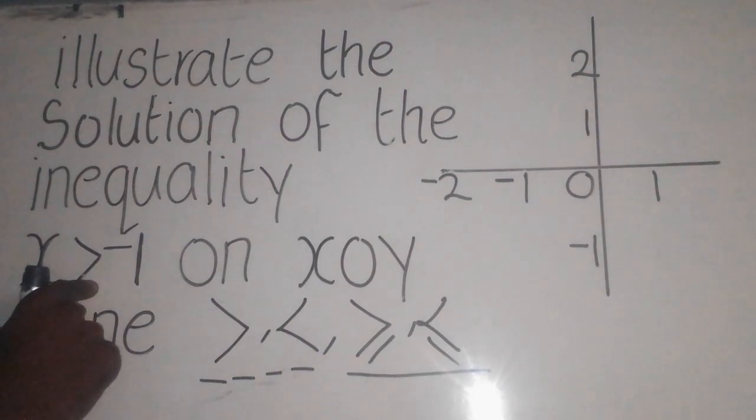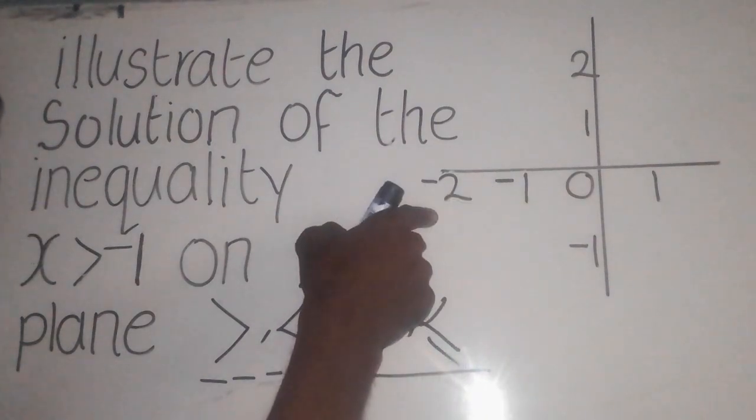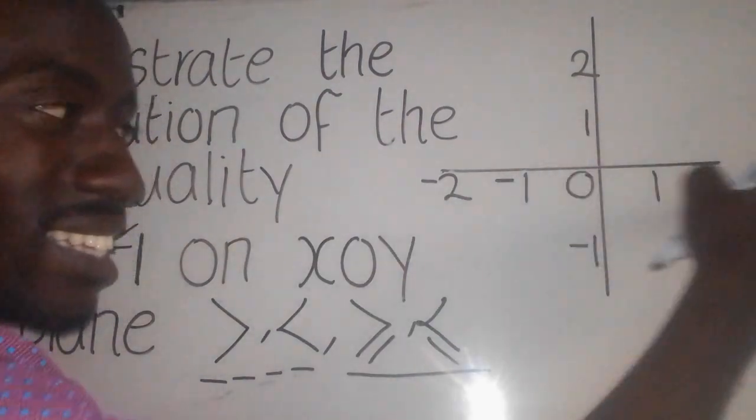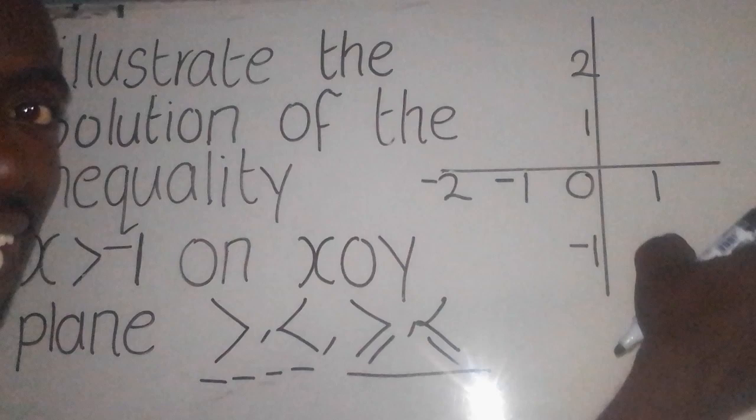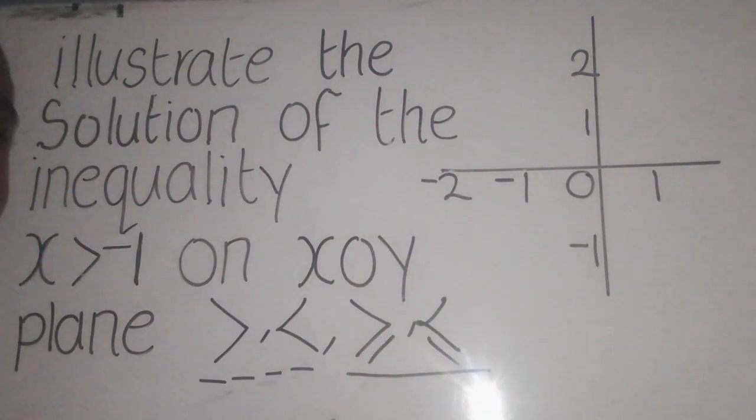Greater than. So, where are the values greater than? Going this side. Because this side is the less. Going this side, that's where the numbers are greater. Because this side, we have the positive. This side is the negative.